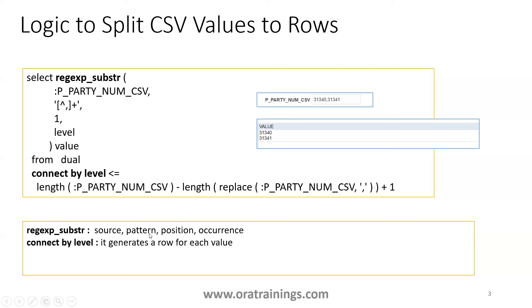There are four input parameters for the REGEXP_SUBSTR function: the source input value, the pattern, the position, and the occurrence. The input value we are passing is a comma separated value, and what we are expecting in return is multiple values as individual records - we provide data as a single record and get data as multiple rows.